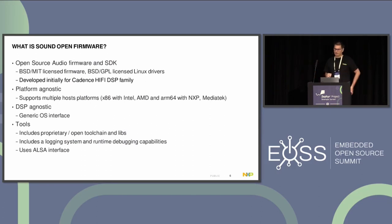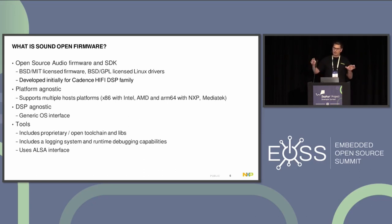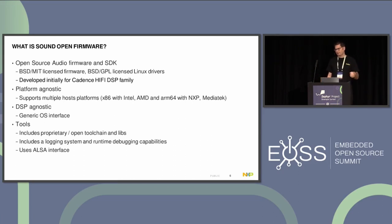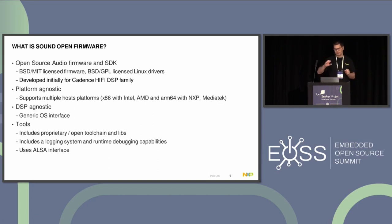Sound Open Firmware is an open source audio firmware and SDK with tooling. The Linux kernel part has a BSD/GPL license driver; the firmware part has BSD/MIT license. It was initially started by Intel on the DSP family from Cadence — HiFi 2, 3, 4, and so on. It was designed by people working on the Linux kernel, and the design shows in how modules and platform independency are organized. The driver is platform agnostic, running on x86 Intel/AMD platforms and on ARM64 NXP platforms. The firmware was also created with platform independency in mind — only the hardware-specific layer needs to change between platforms.